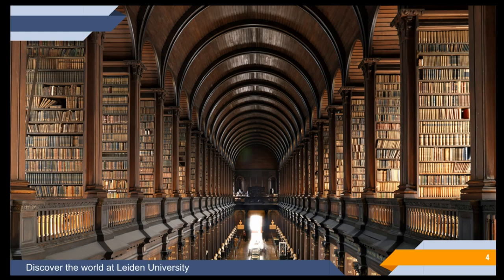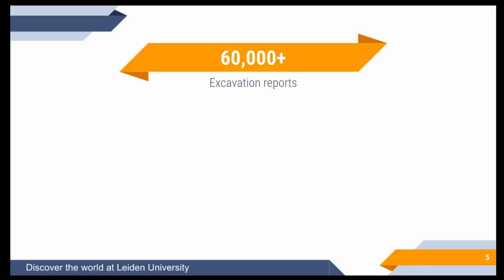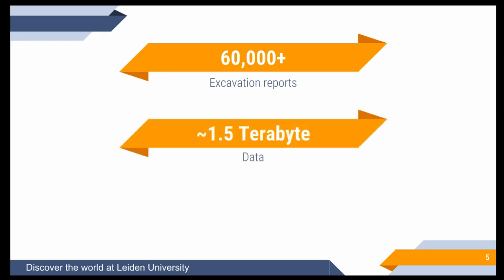I think we're all familiar with this problem: you need some information for research and you're basically presented with a load of different books — although nowadays it tends to be more digital than an actual library. Out of all this information, the only two books you really need are this one and this one. So how do we find those two relevant books? That's where text mining can help.